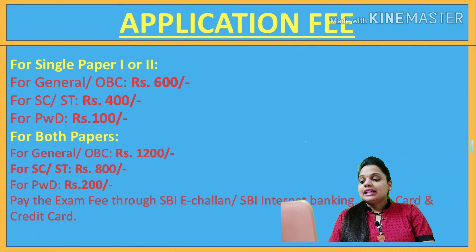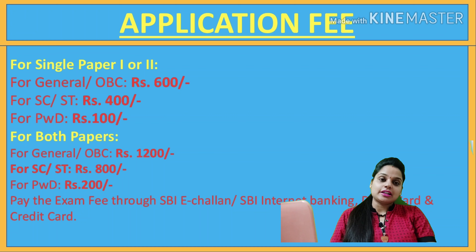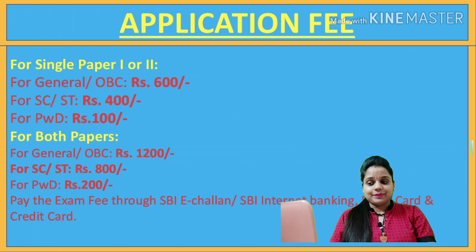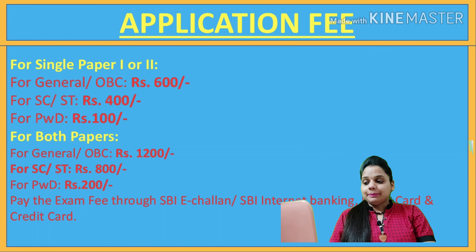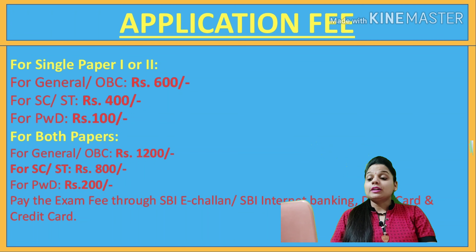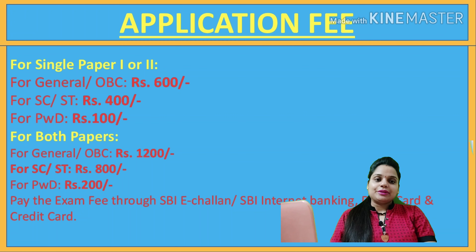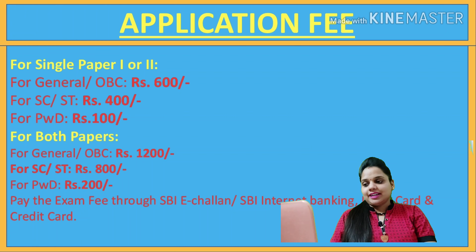Next, application fees. For a single paper — paper 1 or paper 2 — for General and OBC category the fee is 300 rupees. For SC/ST category the fee is 400 rupees. For PWD candidates the fee is 100 rupees. If you have two papers, for General/OBC the fee is 600 rupees, for SC/ST it is 800 rupees, and for PWD candidates it is 200 rupees. You can make payment via SBI internet banking, debit card, or credit card since the form is filled online.